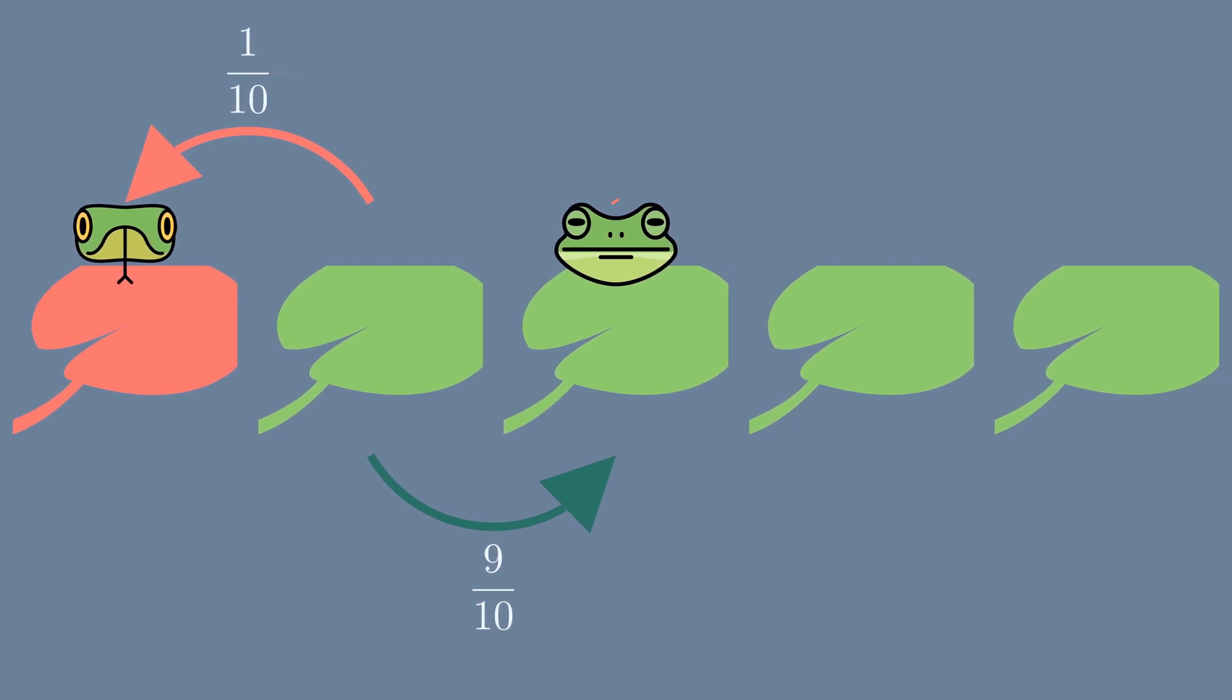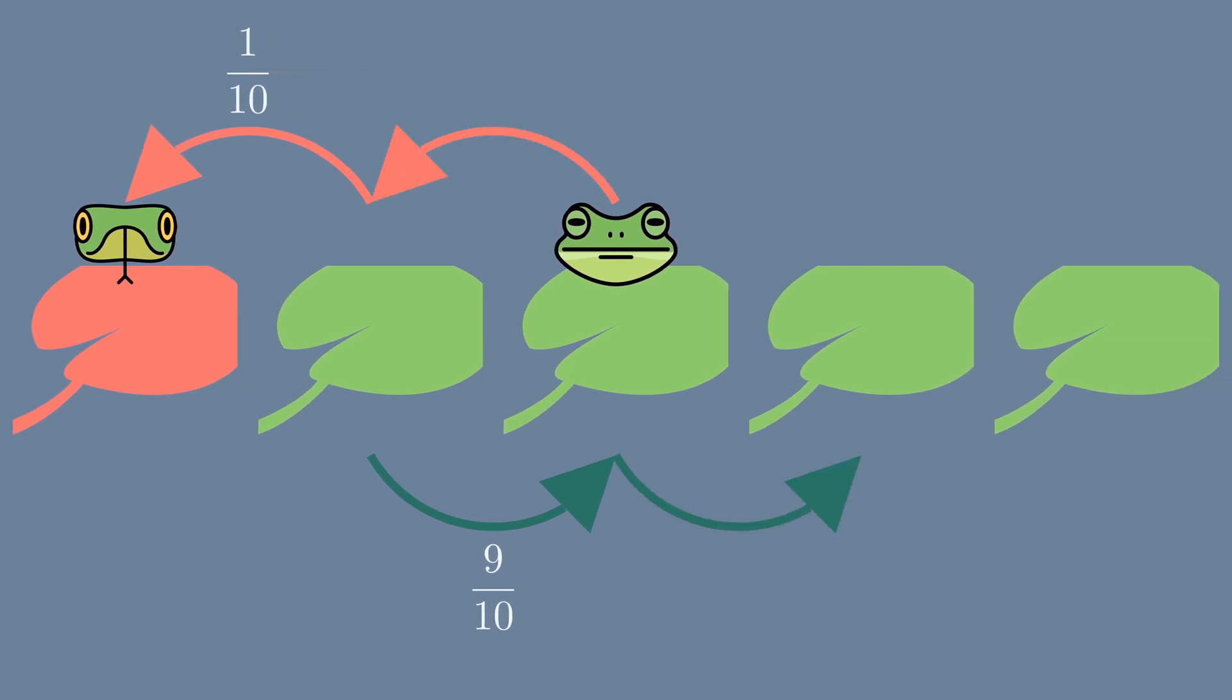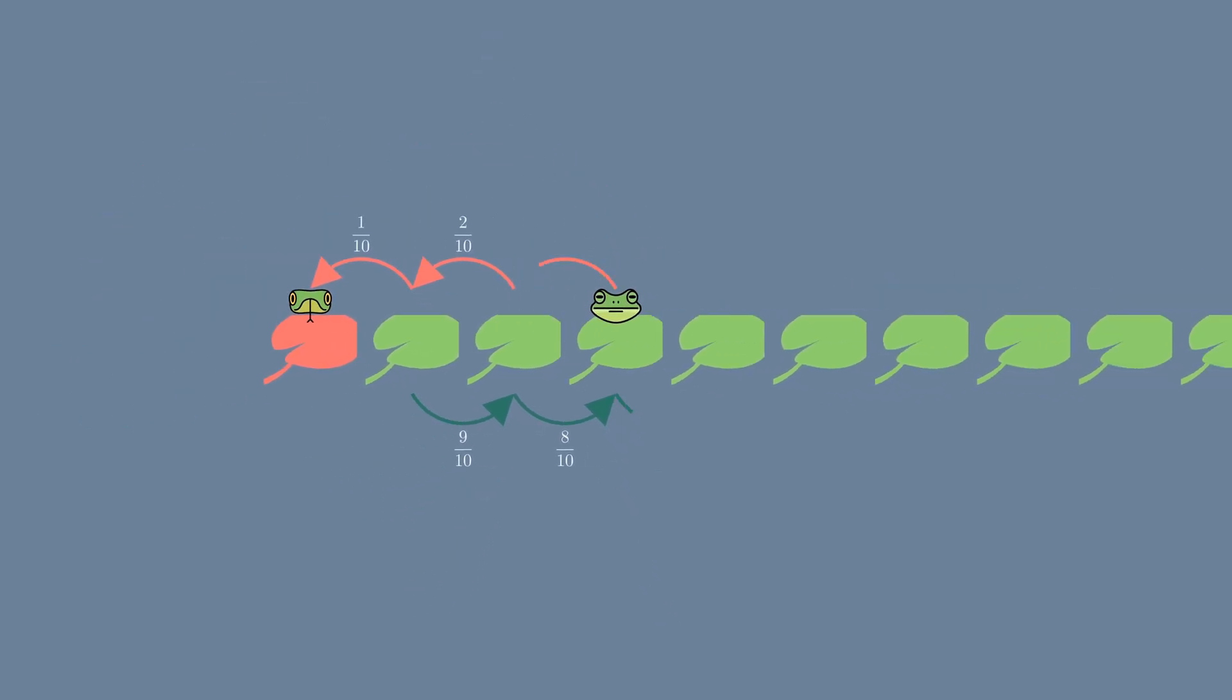But more likely the frog will go right with a 90% chance. This pattern will continue - the chance of going left will increase linearly while the chance of going right will decrease linearly until the frog reaches the last lily pad.